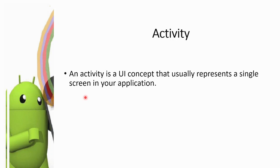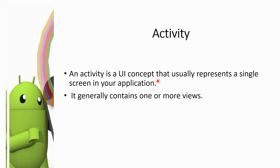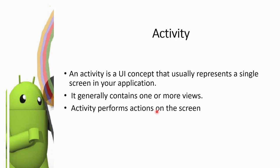An activity in Android represents a single page or screen in the application. It performs a function — for example, a login activity handles login, and a sign-up activity handles sign-up. An activity represents a single screen in your application, generally containing one or more views. Activity performs actions on the screen such as viewing data, creating data, and editing data.